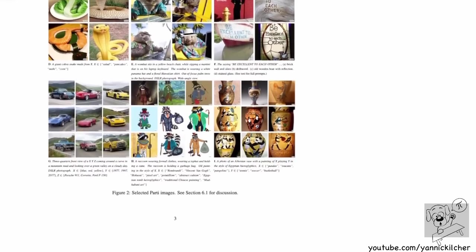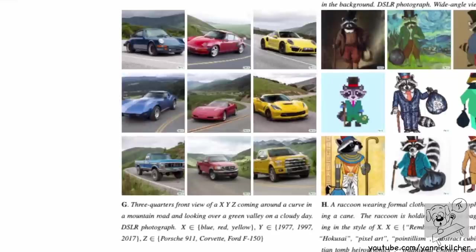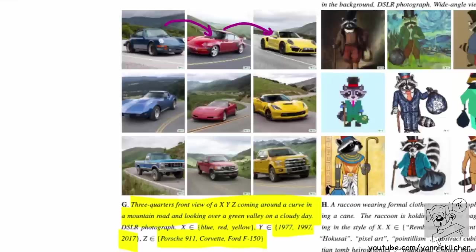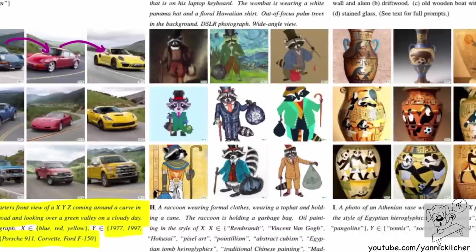On the left side here, they generated images where the prompt is: 'Three-quarters front view of a [color] [year] [car type] coming around a curve in a mountain road looking over a green valley on a cloudy day.' X is any of blue, red, or yellow; Y is any of 1977, 1997, or 2017; and Z is any of various car types. The model can essentially track the historical evolution of these cars — it knows not just what a Porsche is, but how a Porsche in 1977 looked.